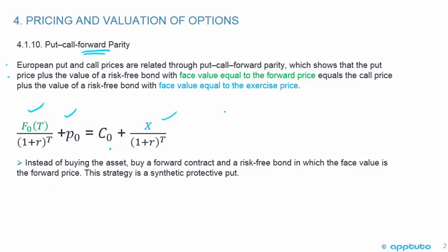You can see highlighted in green that we're looking at the face value of the forward price on the left-hand side, plus the put, equals the call value plus a risk-free bond with a face value equal to the exercise price. So instead of buying the asset, buy a forward contract and a risk-free bond in which the face value is the forward price.